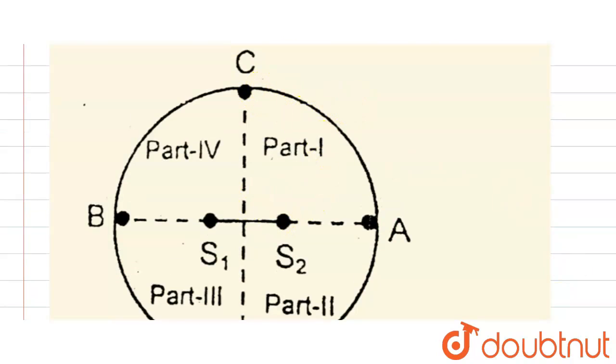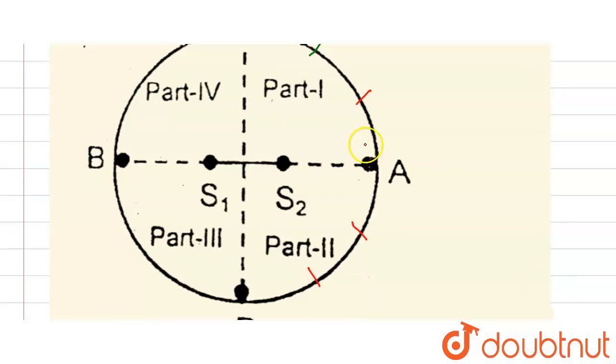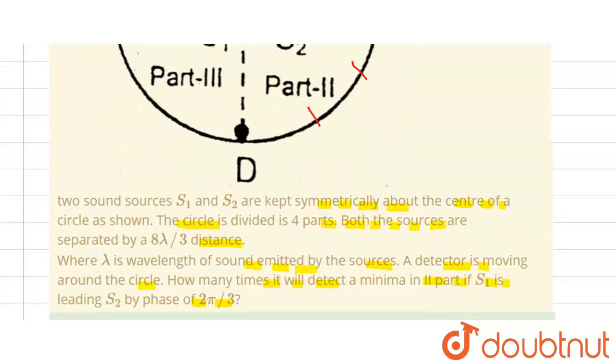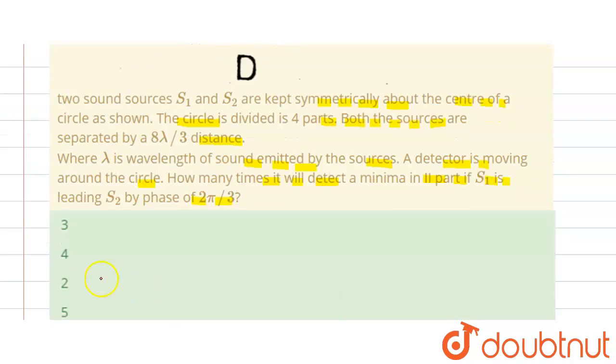So here we can see that in each quadrant two minima. That means two minima will come at each point. So here part two, two minima will come. So now check the option, that means the third option is right.